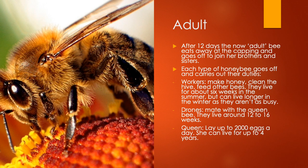After 12 days, the now adult bee eats away at the capping and goes off to join their brothers and sisters in the hive. Each type of honeybee then goes off and carries out their duties. Worker bees make honey, clean the hive, and feed other bees — there are more jobs that they do, but those are just a few. They live for about six weeks in the summer, but in the winter they can actually live longer because they're not as busy. The drone bees' sole role is just to mate with the queen bee, and they live around 12 to 16 weeks.